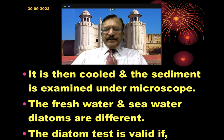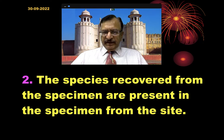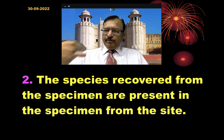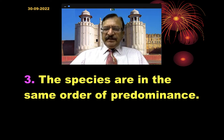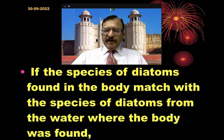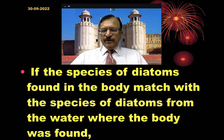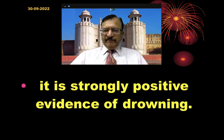The diatom test is valid only if the deceased did not drink that water immediately before immersion, and the species recovered from the specimen are present in the sample from the site. The species detected from the body should match with the species recovered from the medium, and they should be in the same order of predominance — the pattern of predominance of those species should be similar. If the species of diatoms found in the body match with the species from the water where the body was found, it is strongly positive evidence of drowning.